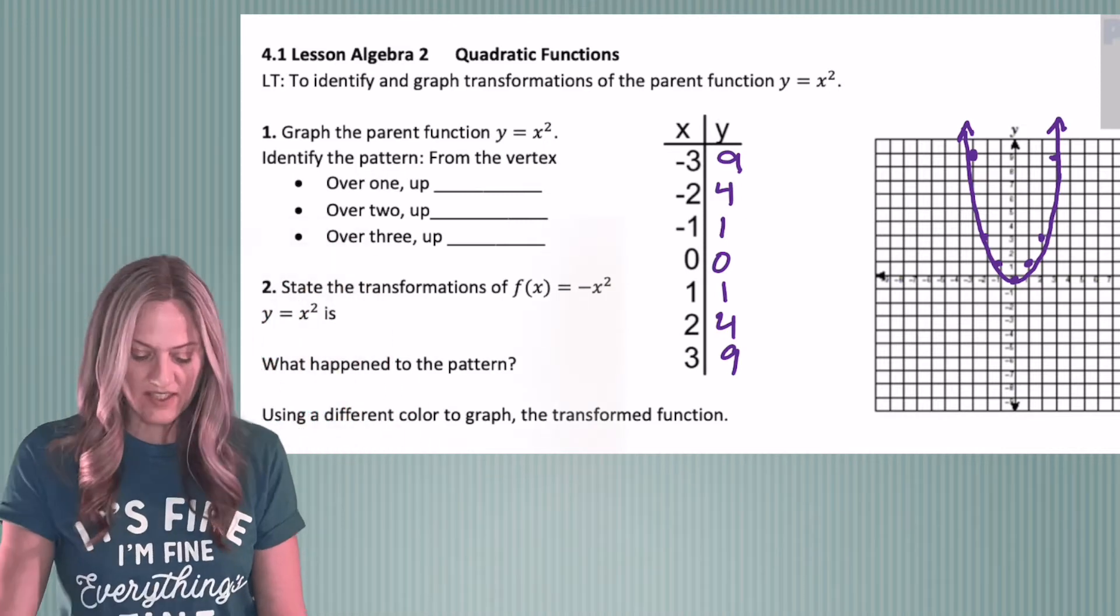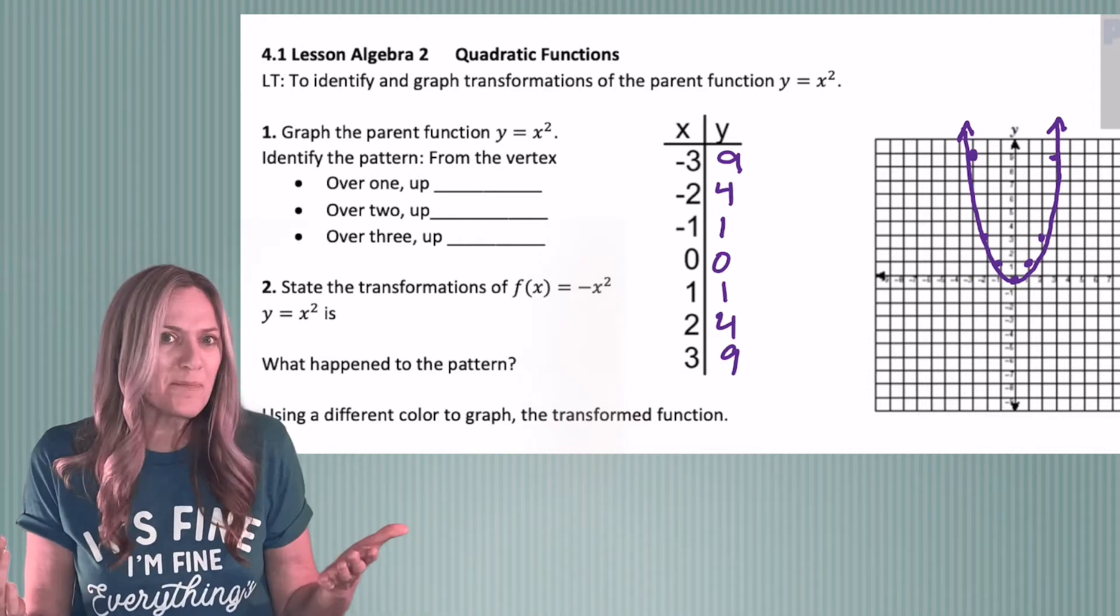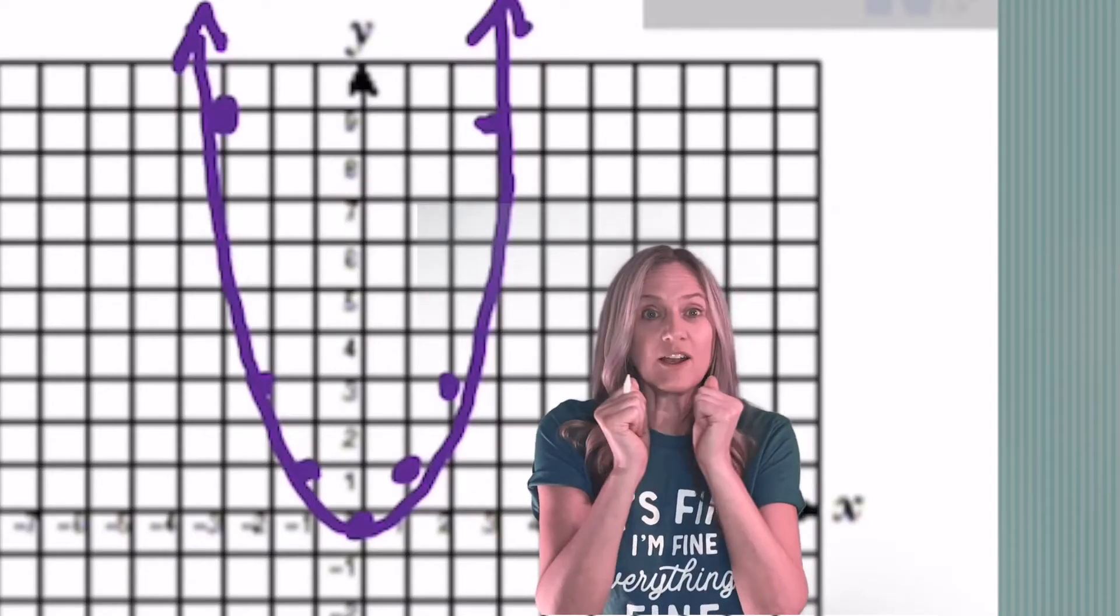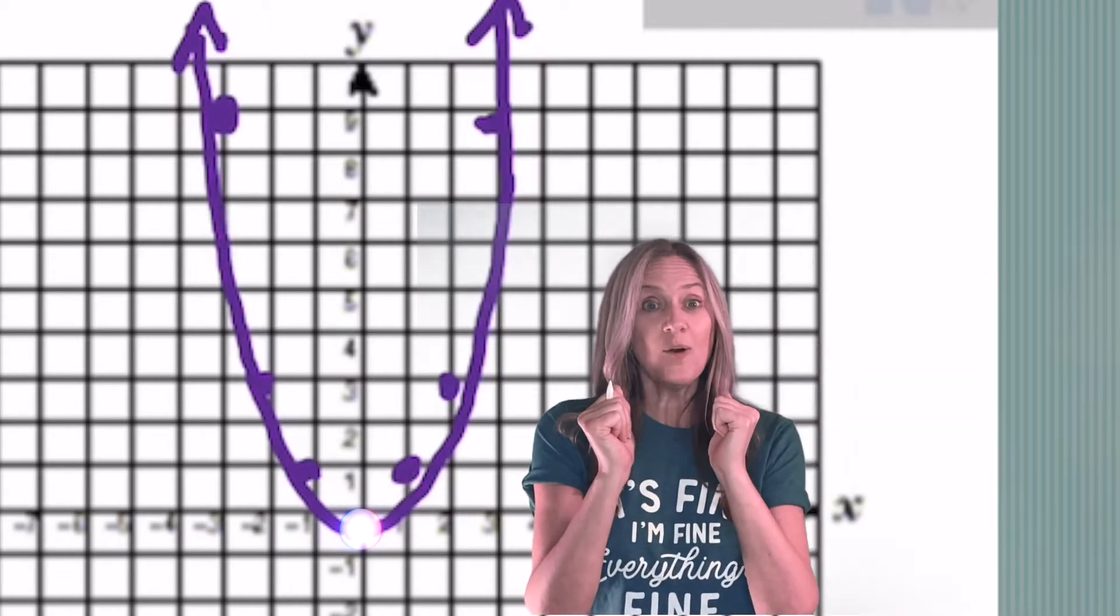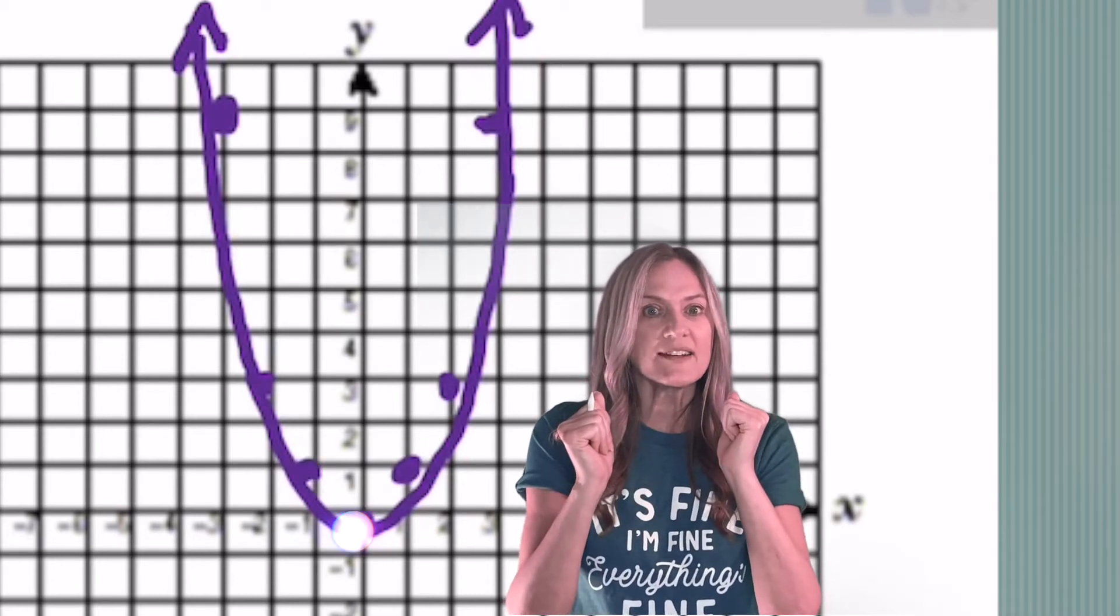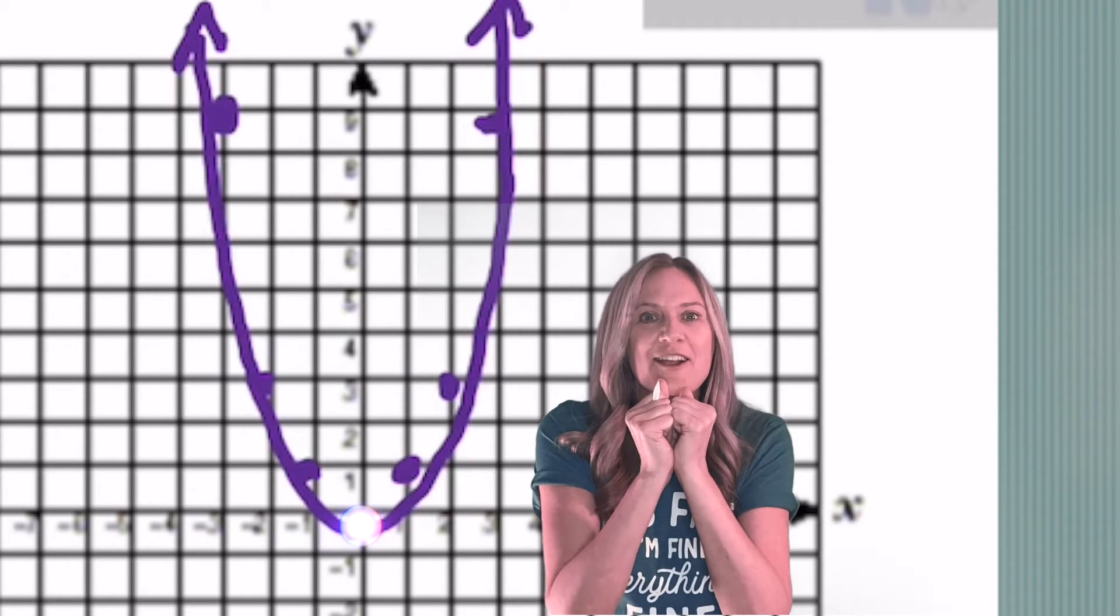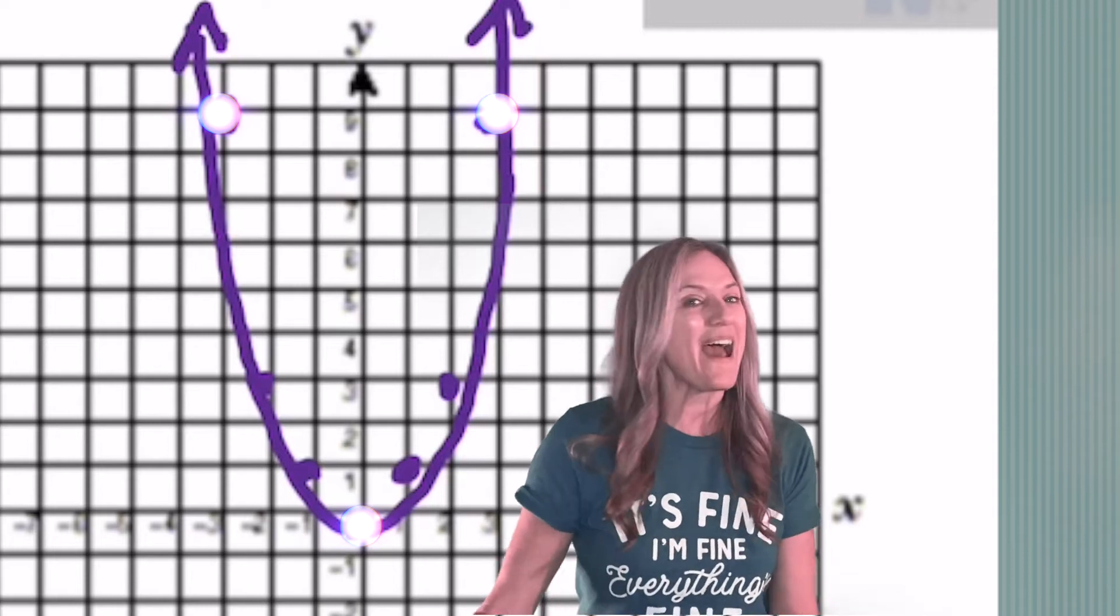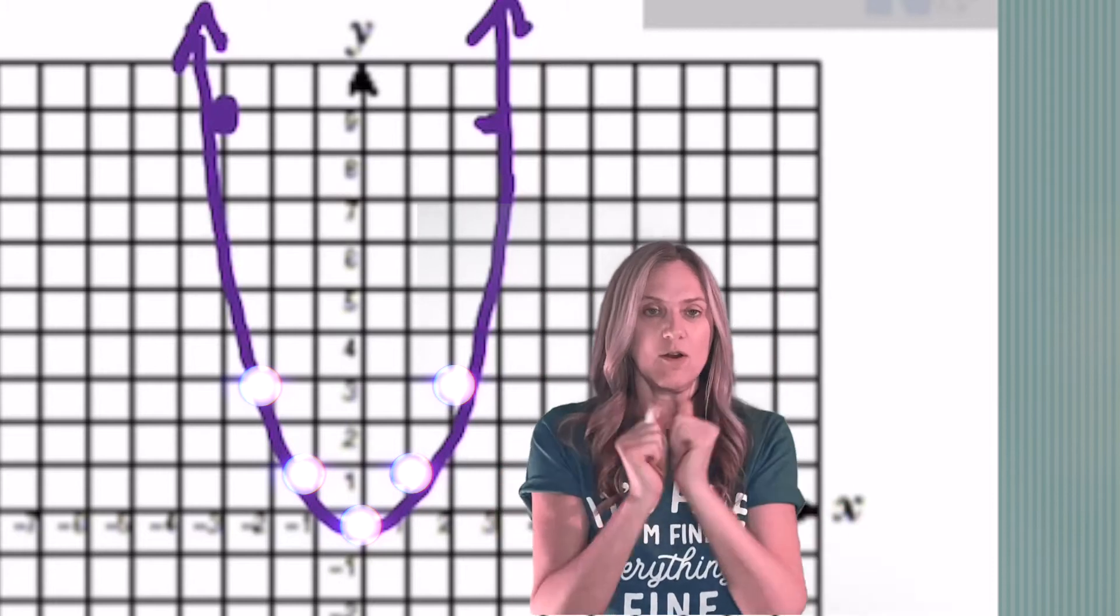Now let's talk about pattern points. We had pattern points on our absolute value function. What are the pattern points on a parabola? So I'm at the vertex, 0, 0. I go over 1 in both directions and up 1 squared, up 1. Back at the vertex, I go over 2 and up 2 squared, up 4. Back at the vertex and I go over 3 and I go up 3 squared, 9. There we go. The pattern points for a parabola. Over 1, up 1. Over 2, up 4. Over 3, up 9.